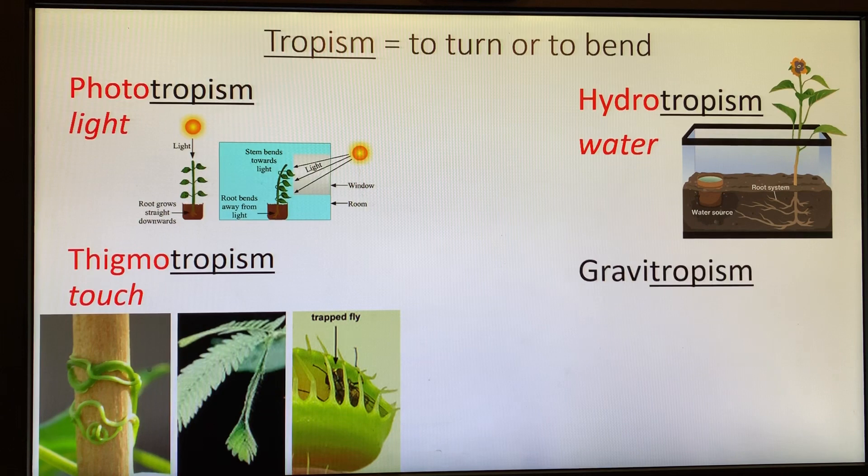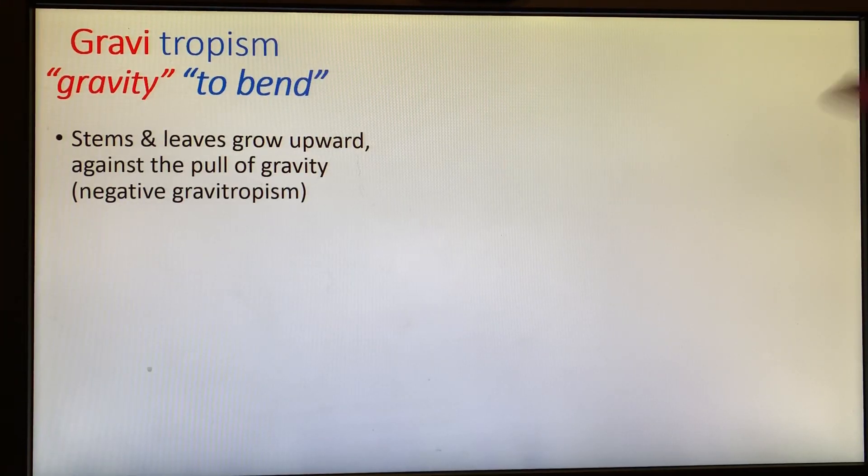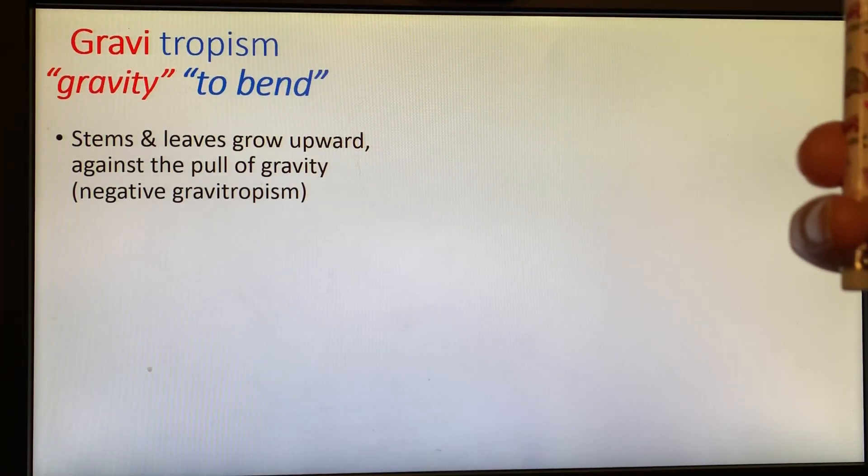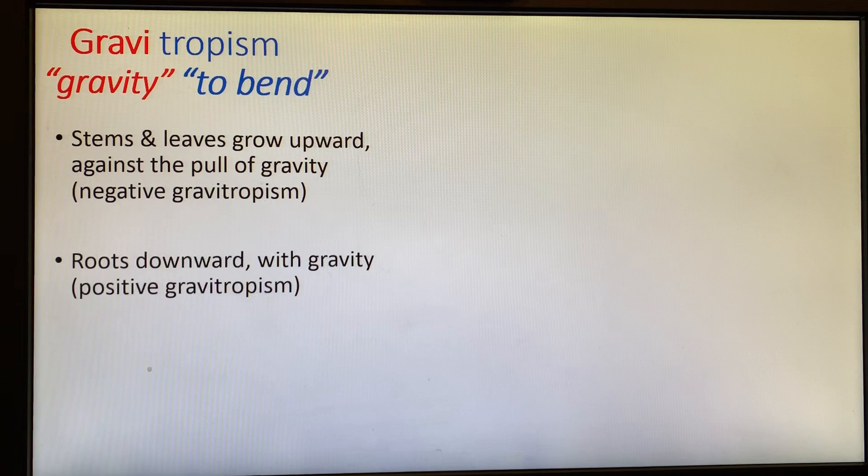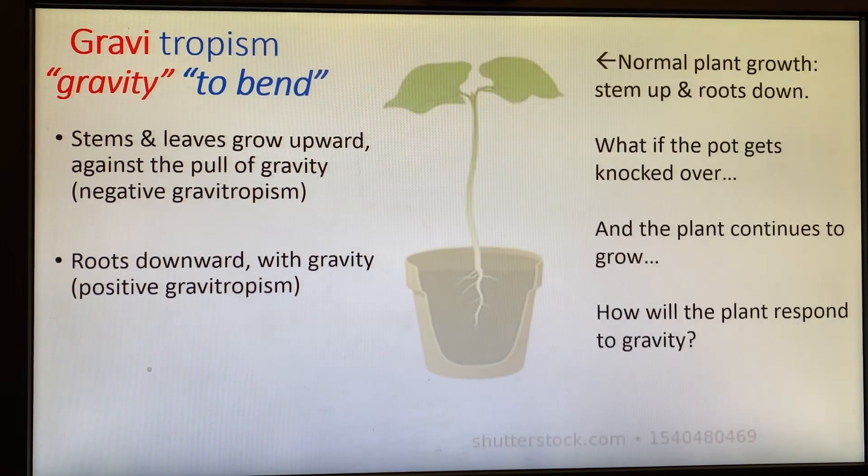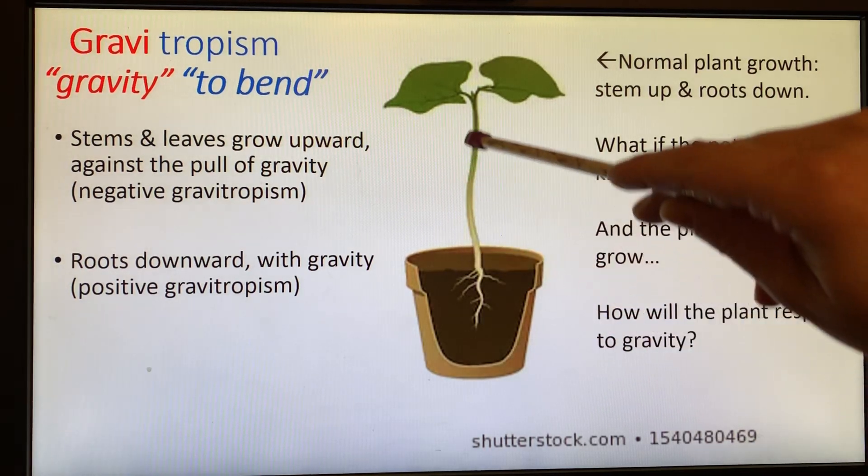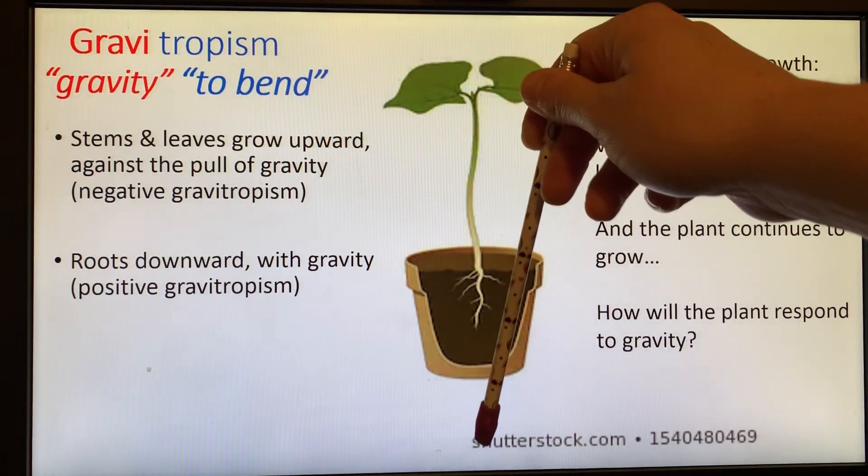Last form of tropism, gravitropism. Talking about gravity bending, the plant bends because of gravity. Stems and leaves grow up against the pull of gravity. That's called negative gravitropism because it goes against the direction of gravity. Whereas roots grow down with gravity, a positive gravitropism. Normal growth, stem goes straight up, roots grow straight down.